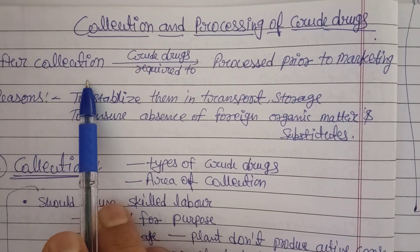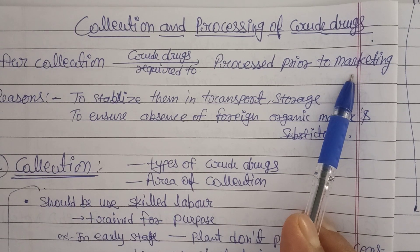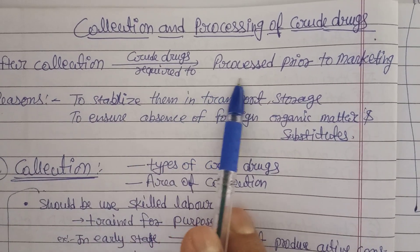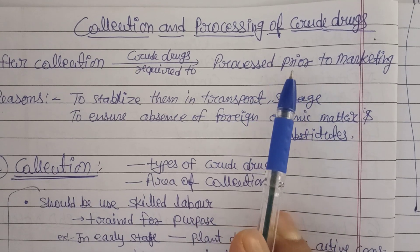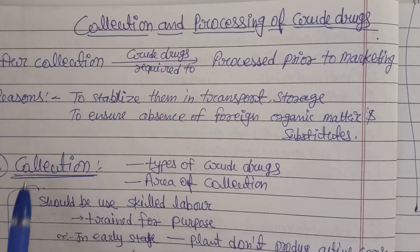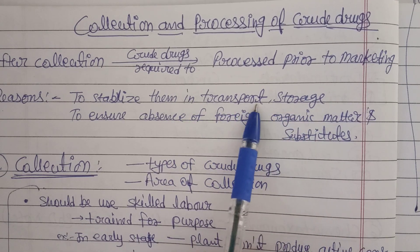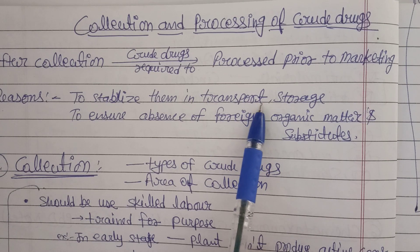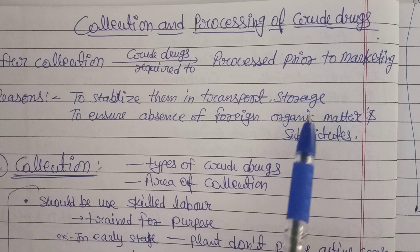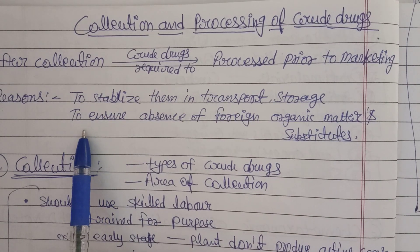After collection, crude drugs require processing prior to marketing. For example, if you harvest ginger — say one ton — after collection you have to process it before marketing: remove earthy matter and unwanted things along with the crop. The reason for processing is to stabilize the drug during transport and storage, where vibration, temperature, and pH can change the crude drug.